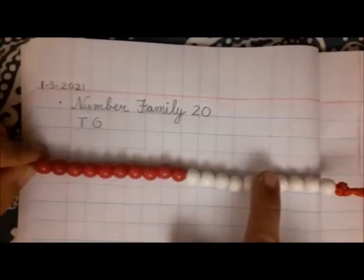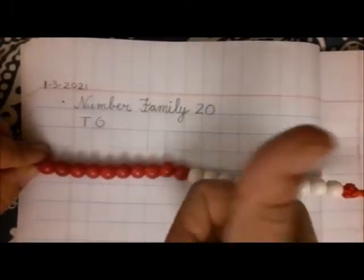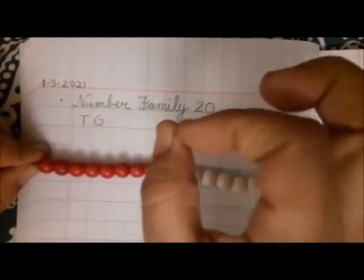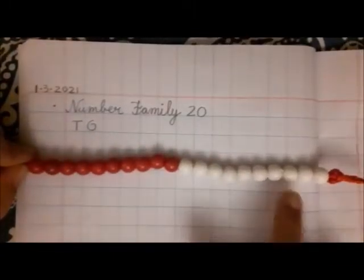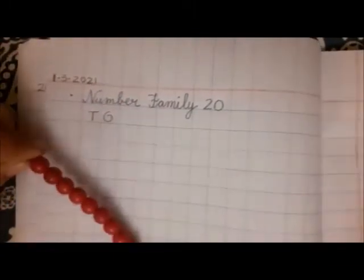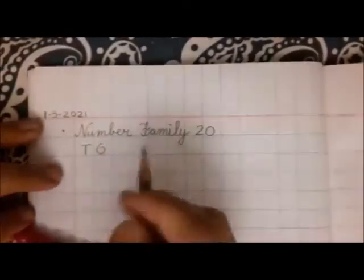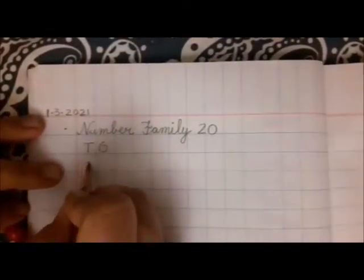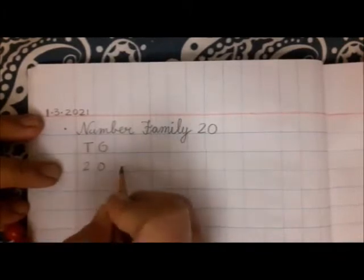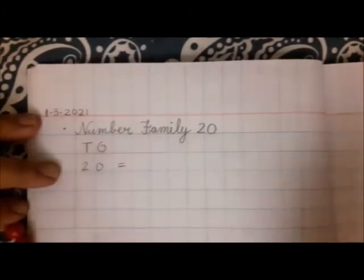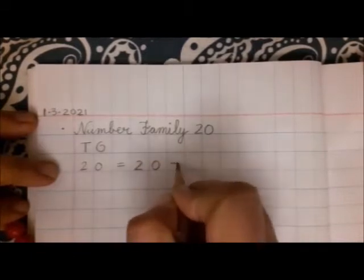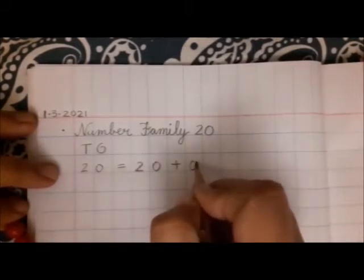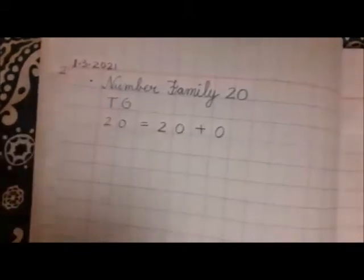When we have two tens and zero extra, zero ones, that is number 20. Easy peasy. Number 20 is when there are two tens and zero ones. This is number 20.